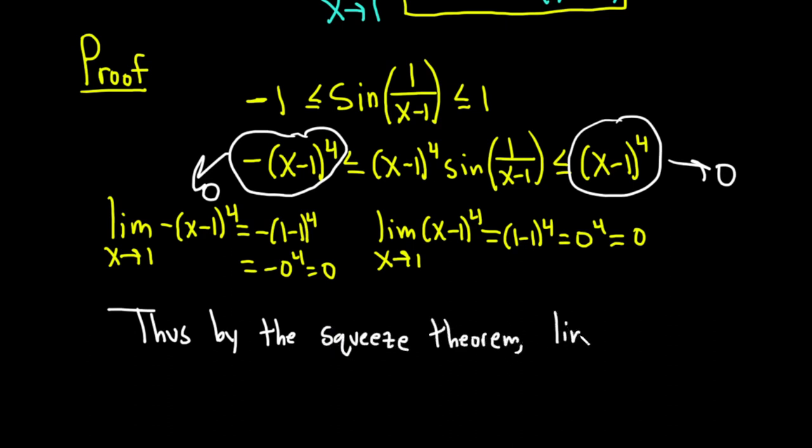we have that the limit as x approaches 1 of x minus 1 to the fourth power times the sine of 1 over x minus 1 is equal to 0. And that completes our proof.